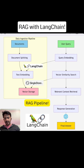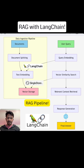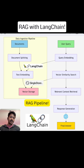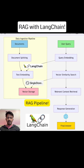Prompt engineering is the art and science of talking with your LLMs, making sure it produces the right responses, and basically experimenting with your prompts. Whereas RAG — retrieval augmented generation — is considered the most recommended option or strategy to mitigate the hallucinating behavior of LLMs in your AI applications.